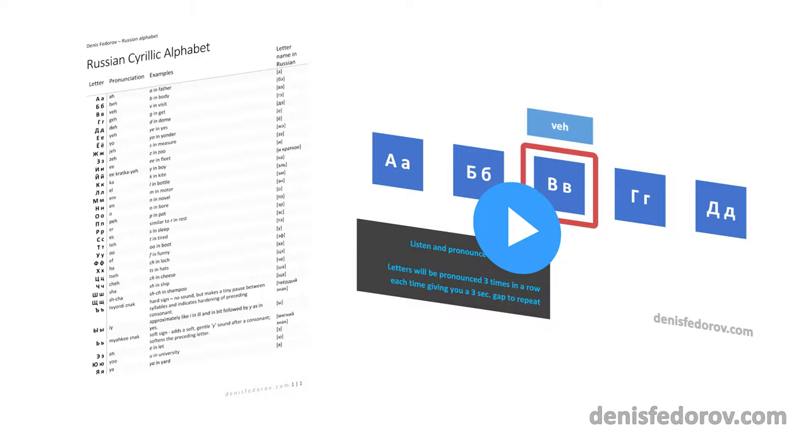For that purpose, you will need two files. The link to them is in the description. These files are Russian alphabet PDF and Russian alphabet pronunciation training video. Here are instructions on what to do with them to learn to pronounce the Russian alphabet properly.